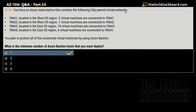Just to elaborate further — had this not been a fully paired network, then to protect all the connected virtual machines using Azure Bastion, you would need to deploy at least two Azure Bastion hosts: one for the West US region and one for the East US region. But that is only needed when the networks are not fully paired. In this question, all networks are fully paired, so only one Azure Bastion host is required.